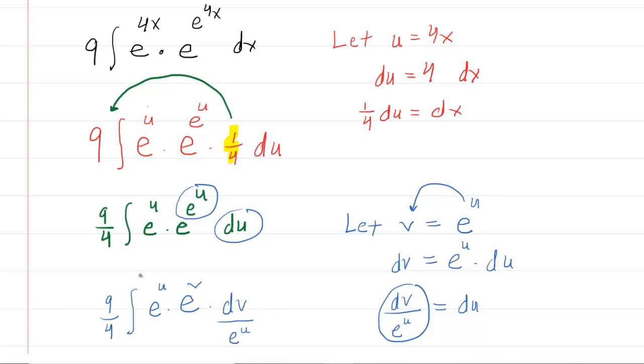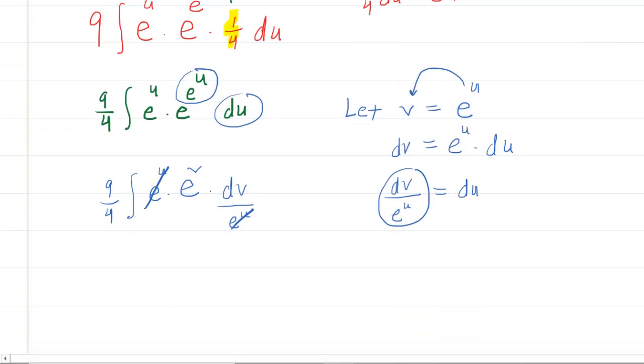Now if you look very carefully, the e to the u in the numerator here and the e to the u in the denominator there cancel out. And we are finally left with a relatively easy integral of just e to the v dv.